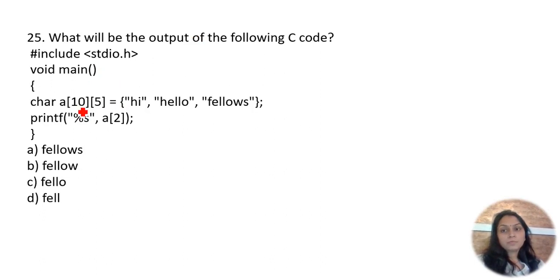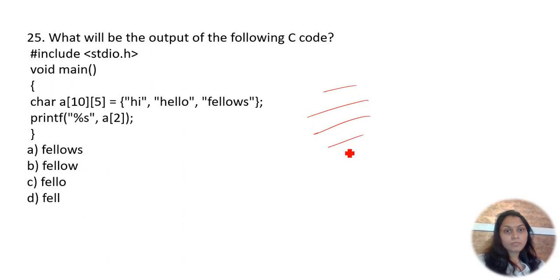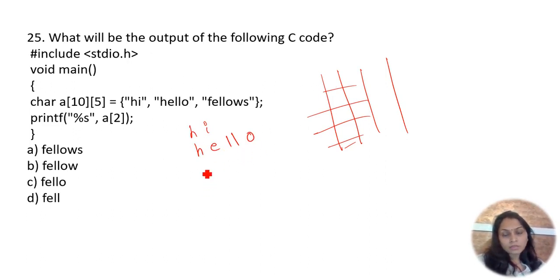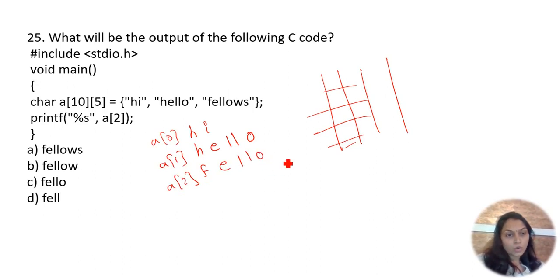What will be the output? char a[10][5] has 10 rows and 5 columns. The strings 'hi', 'hello', and 'fellow' are stored. a[2] refers to the third row with only 5 columns — 'f','e','l','l','o'. It won't print 'w' because there are only 5 columns. Option C is correct.